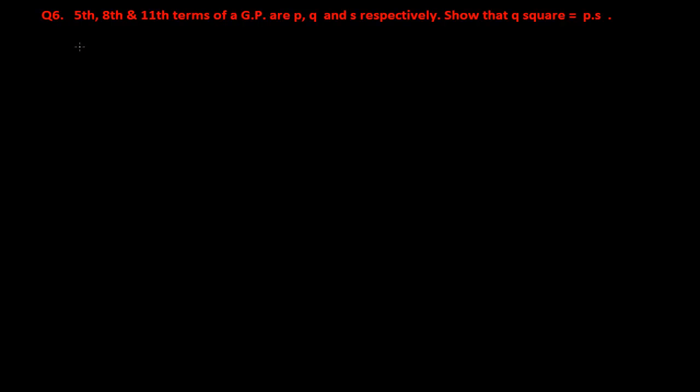Welcome friends. Here is another nth term related problem of geometric sequence. The question states: the 5th, 8th, and 11th terms of a GP (geometric progression) are P, Q, and S respectively, such that Q squared equals P times S. We need to prove this.